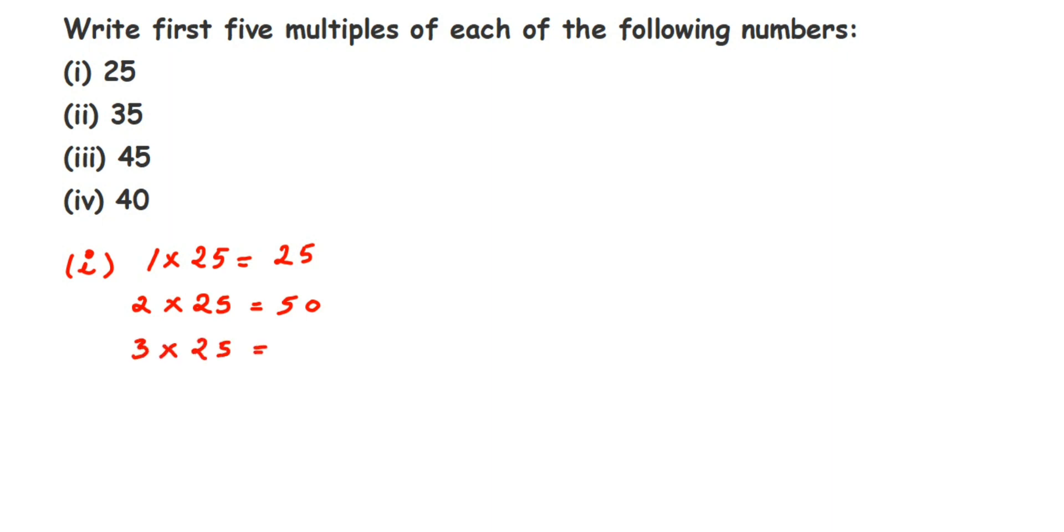3 into 25 is equal to 75. 4 into 25 is equal to 100. The last one is 5 into 25, which is equal to 125. So here 25, 50, 75, 100, and 125 are the multiples of 25. I hope it's clear.